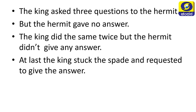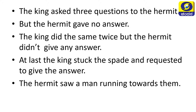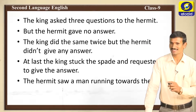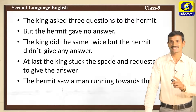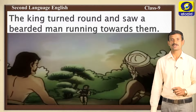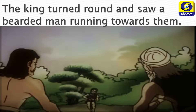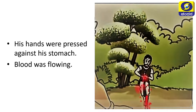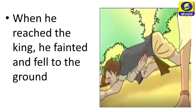The hermit saw a man running towards them. The king turned round and saw a bearded man running towards them — his hands were pressed against his stomach. Someone had stabbed him and blood was flowing. When he reached the king, he fainted and fell to the ground. He was very weak, having run far from his place.